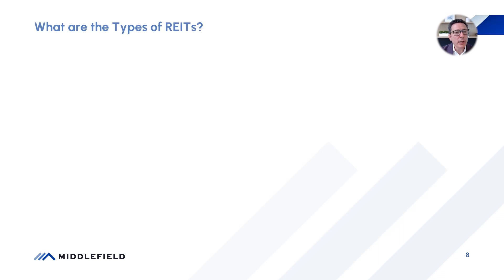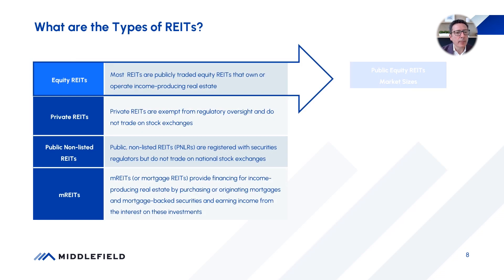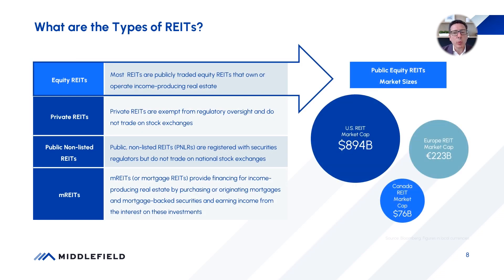The various types of REITs: equity REITs are when you buy units of a REIT on a publicly listed exchange and you represent an owner of that business. Private REITs are REITs that are not listed on an exchange and don't have the regulatory oversight that a publicly listed REIT does.